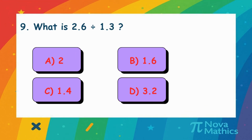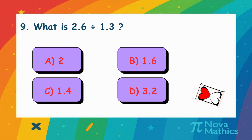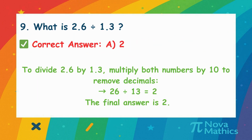8. What is 2.6 divided by 1.3? We want to divide 2.6 by 1.3. Multiply both by 10 to make them whole numbers. 26 divided by 13 equals 2.